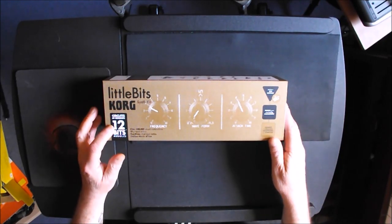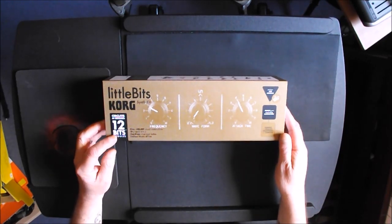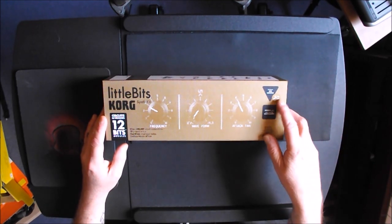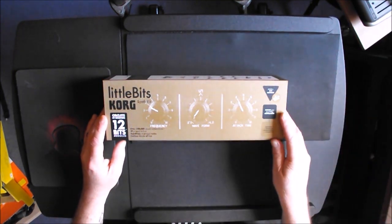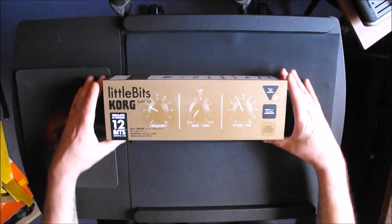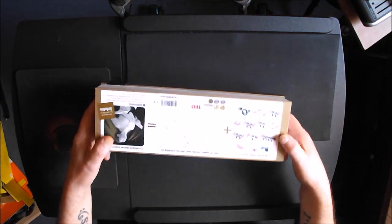You get 12 bits, 12 modules in the kit, and it says you can put on a live concert. It's for ages 14 to infinity and you can design your own analog instrument and connect it to speakers, headphones, or a computer. Let's have a look. It's a nice box.